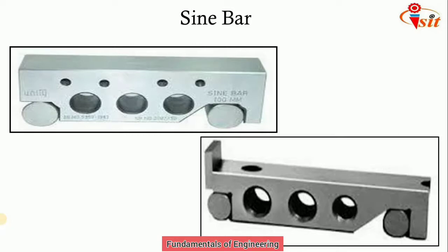The sine bar is not in itself a complete measuring instrument. Another datum such as a surface plate is needed, as well as auxiliary equipment like slip gauges and indicating devices. Sine bars used in conjunction with slip gauges constitute a very good device for precise angle measurement. Sine bars are made from high carbon, high chromium, corrosion-resistant steel — hardened, ground, and stabilized — with two cylinders of equal diameters attached at the ends.